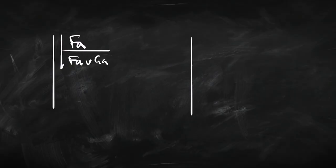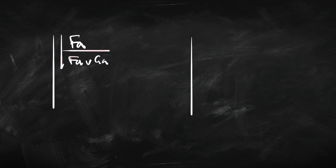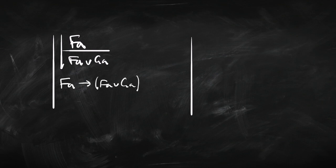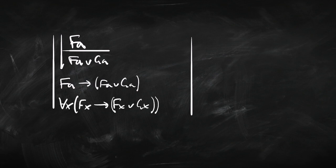Let's think about some forms of reasoning involving 'everything' that seem to be perfectly good inferences. Suppose we start off by assuming that a is F, and from that we infer that either a is F or a is G. Well, from that we can conclude by arrow introduction that if a is F, then it's F or G. From that we can conclude that everything is such that if it's F, then it's F or G. That seems like a good bit of reasoning, and in fact it is.